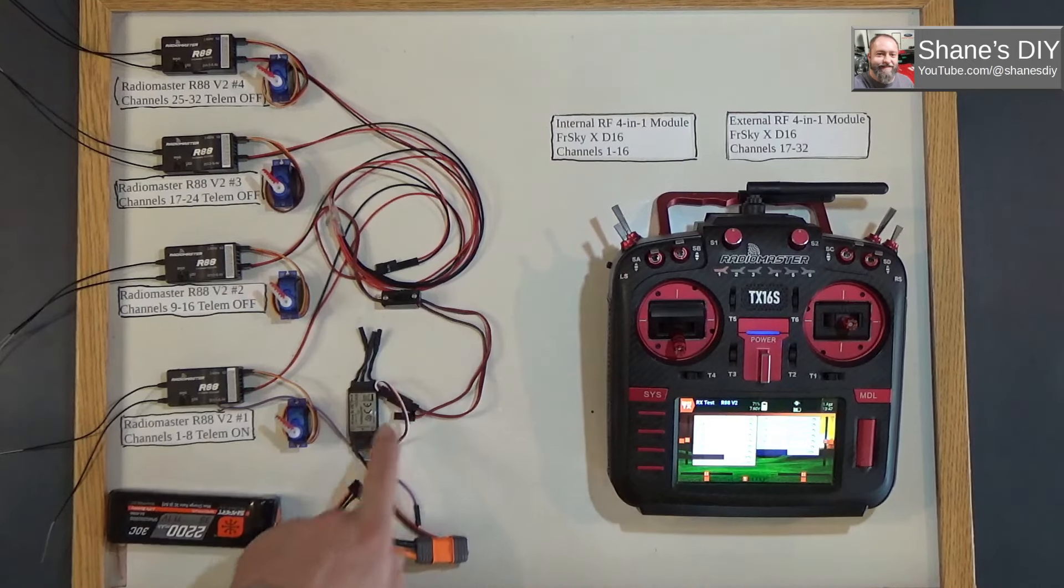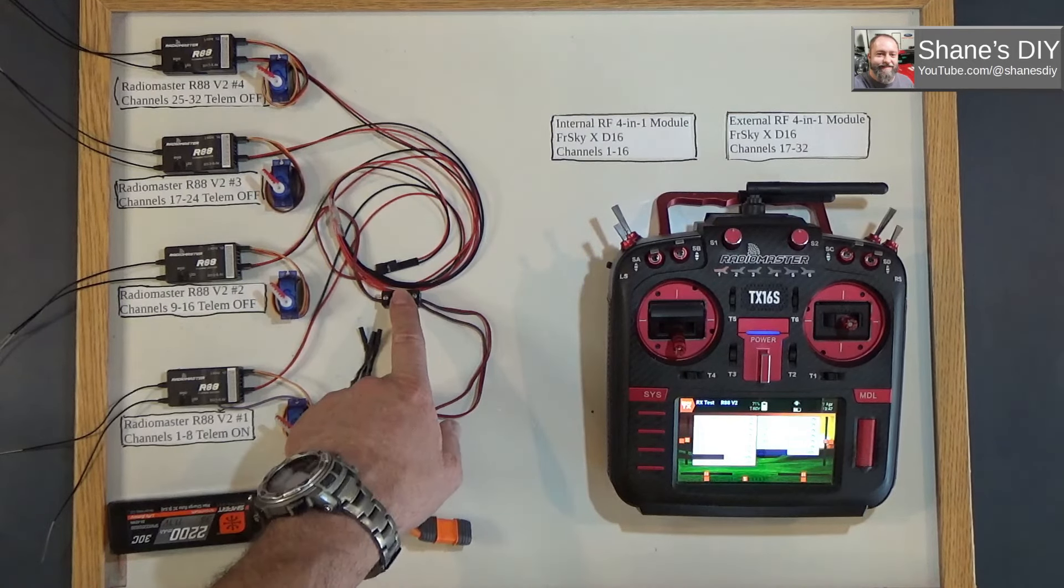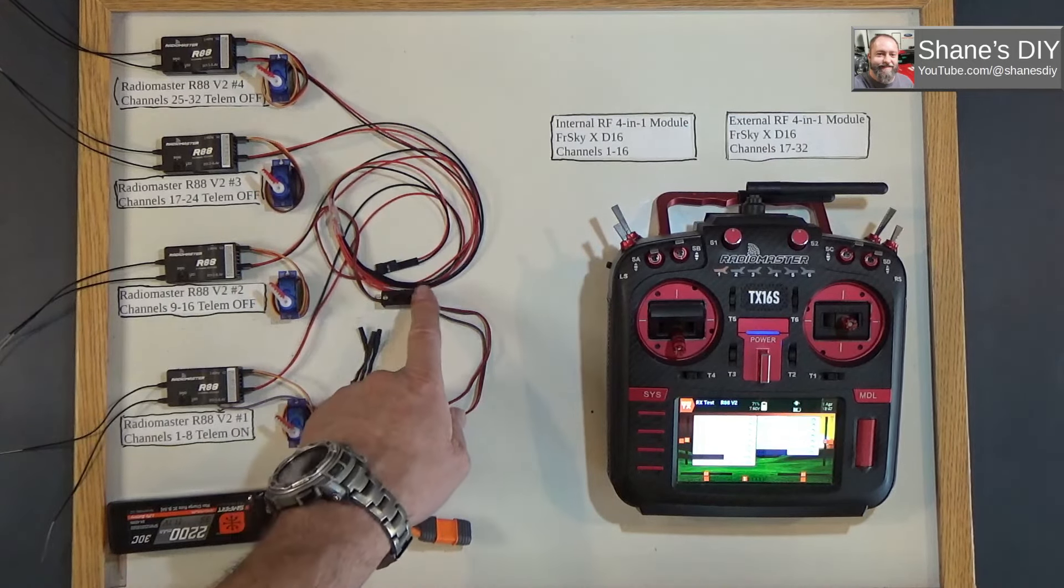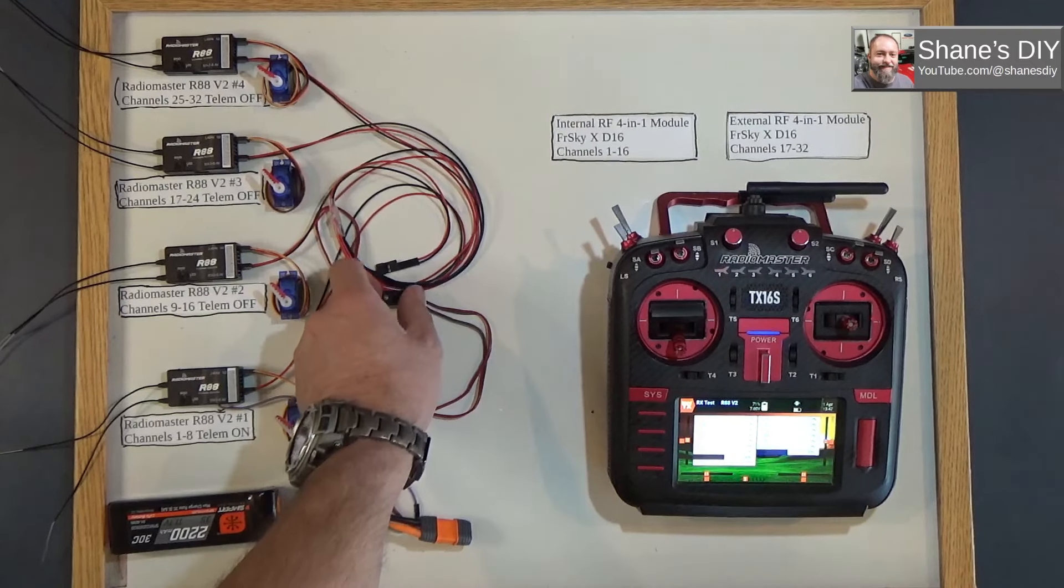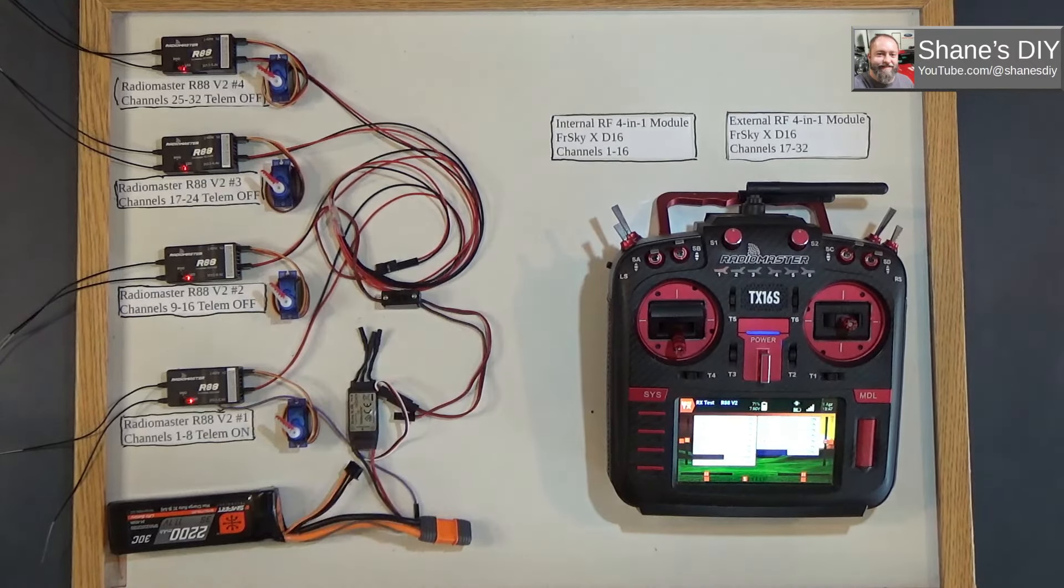Right now I've got it set up on the small ESC and just an on-off switch to turn on the power to these receivers. So let me energize these. They're bound up now, but I'm going to go through the binding procedure so you can see how you'll set this all up.